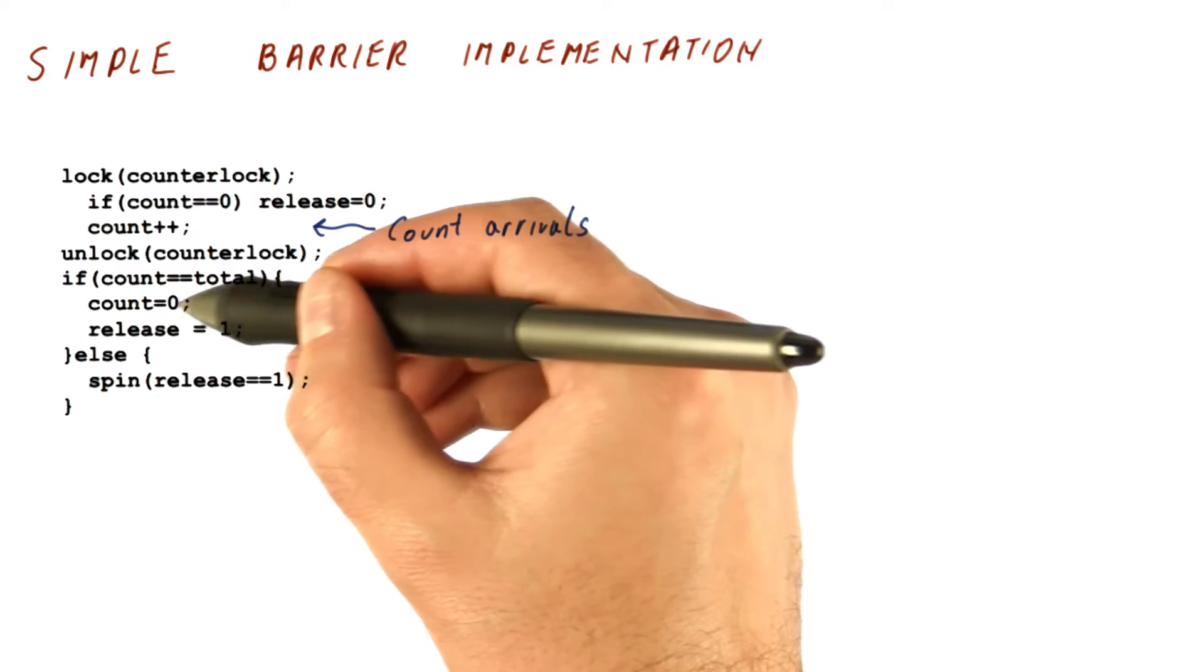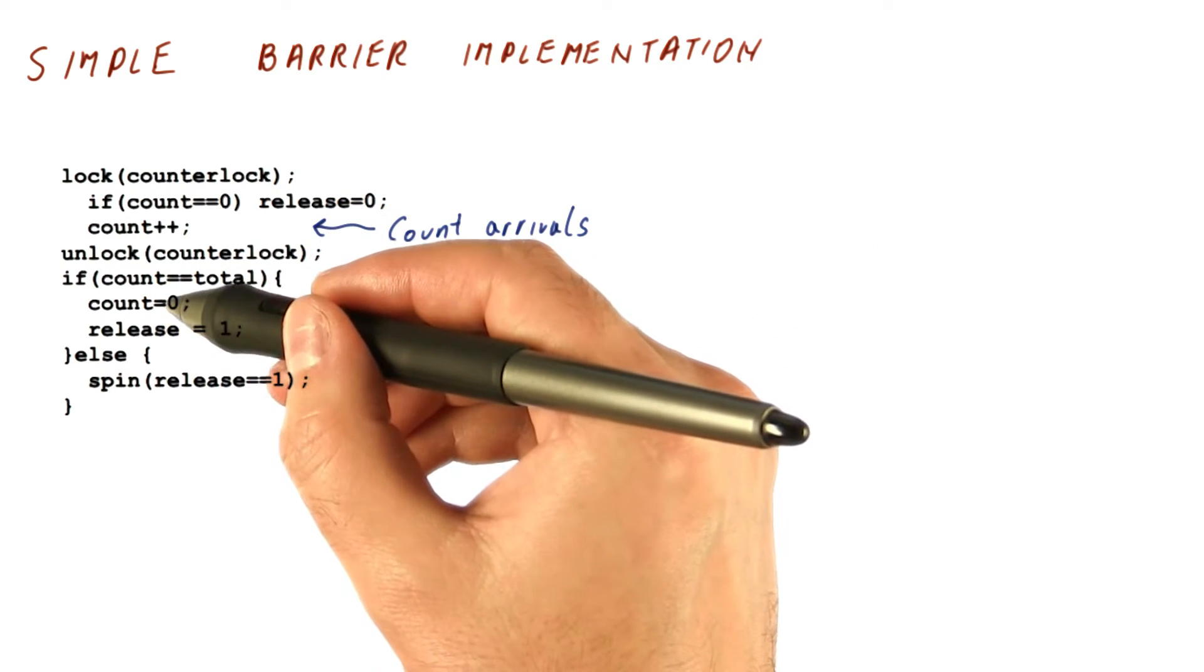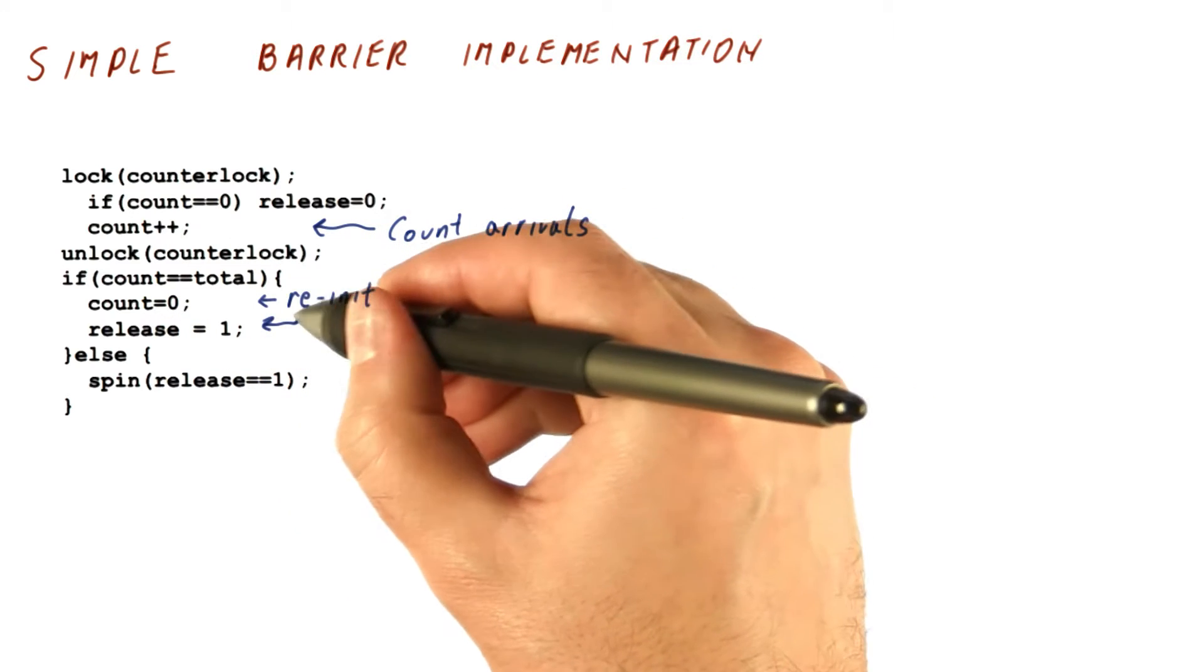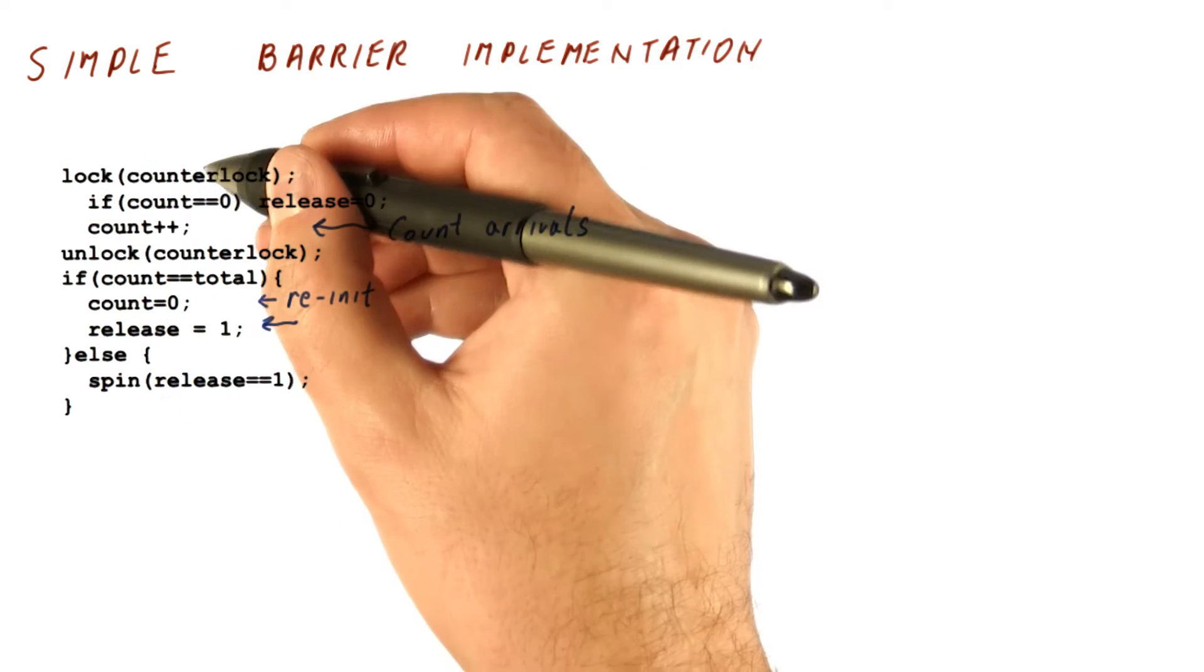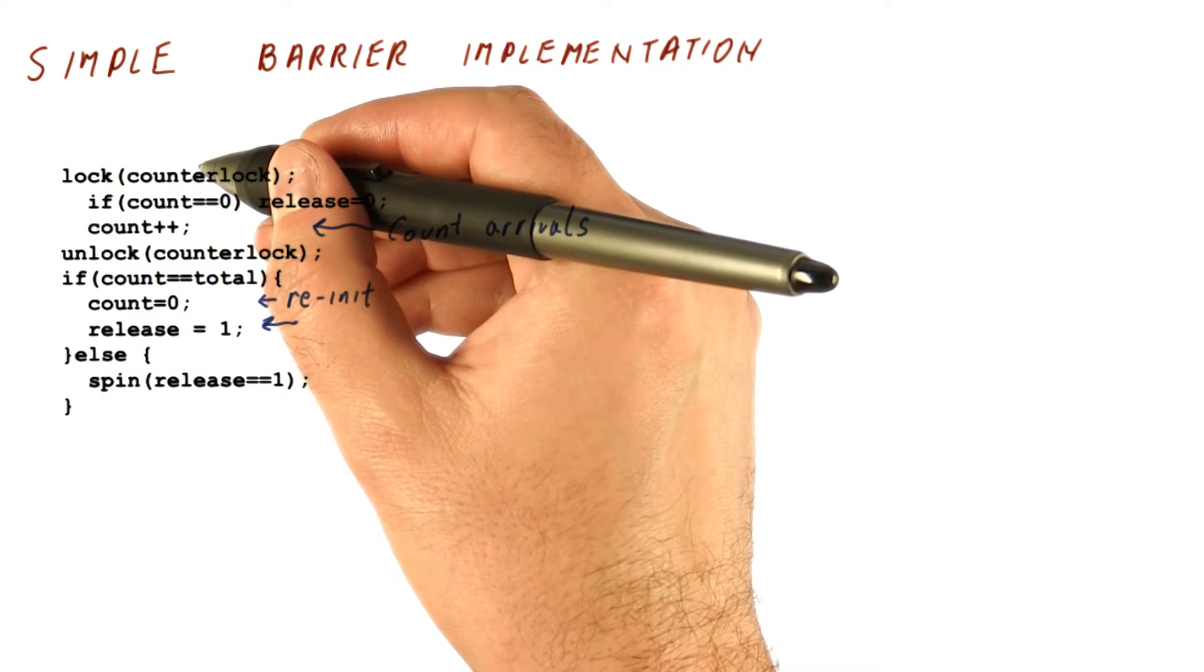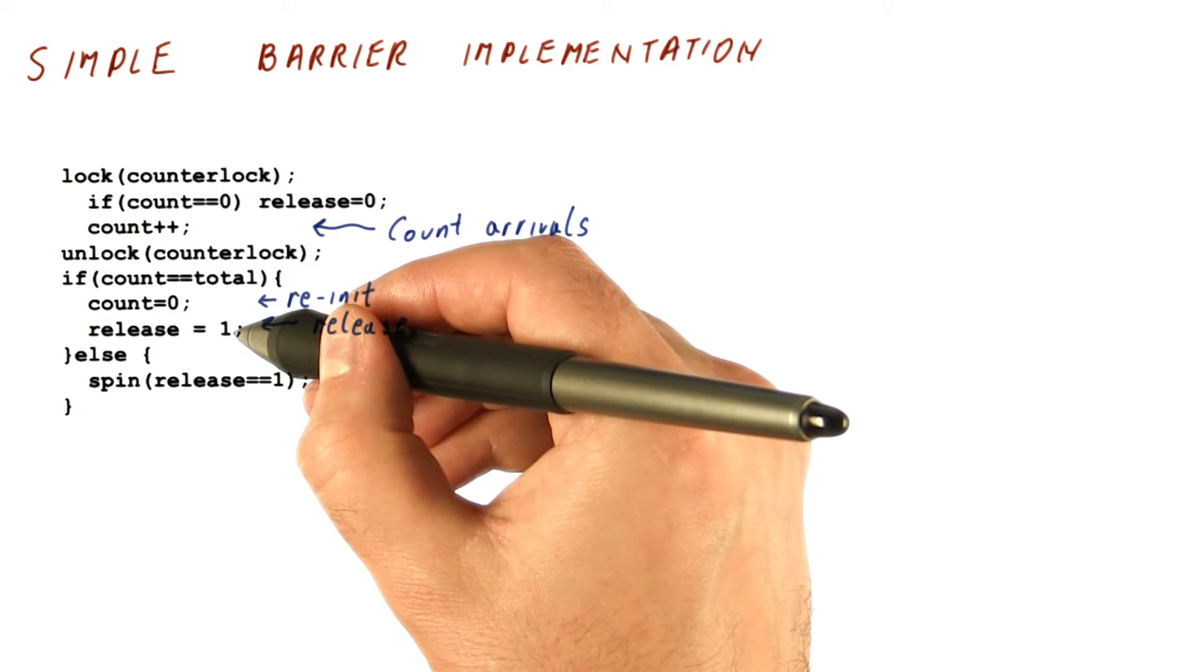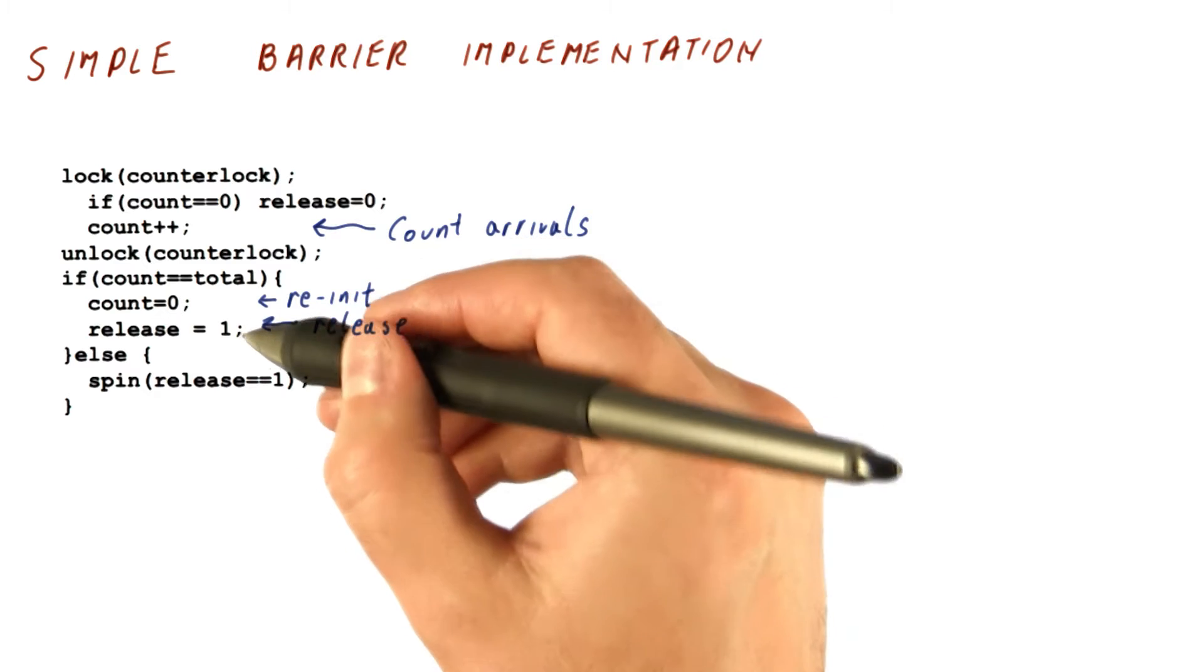Either way, if the counter is equal to the total, then we reset the counter, because it needs to be re-initialized, so that next time we enter the same barrier variable, we have the count at zero. And we set the release flag to one, so that the threads who are waiting find out that the barrier can now be released.